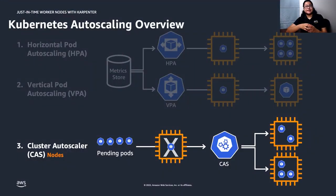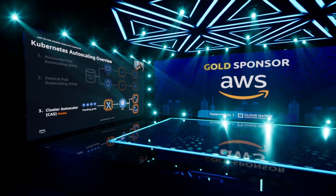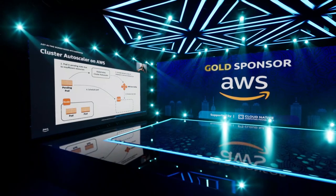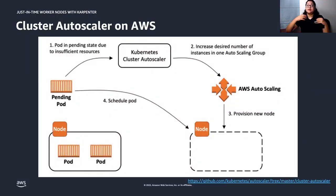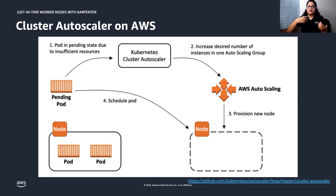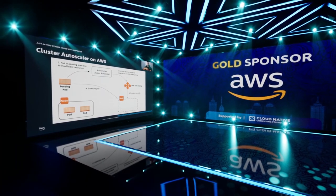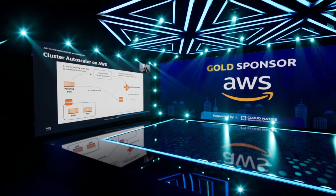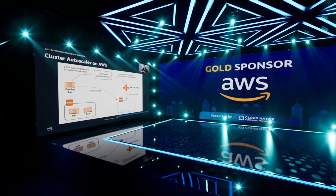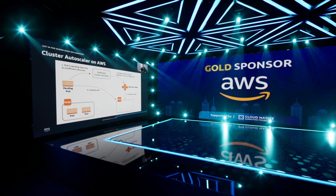The Cluster Autoscaler automatically adjusts the number of nodes in your cluster. When your pods fail or are rescheduled onto other nodes, it ensures your cluster has enough nodes to schedule pods without wasting resources. It watches for pods that have failed to schedule and for nodes that are underutilized, then simulates the addition or removal of nodes before applying the change. The AWS cloud provider implementation within the Cluster Autoscaler controls the desired replicas field of the EC2 Auto Scaling Group.